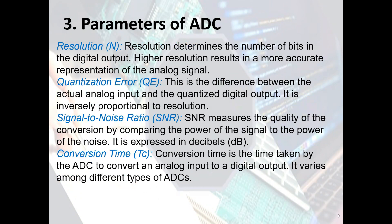Regardless of the type of ADC used, these are some key parameters to consider. Resolution, represented by the variable n, determines the number of bits in the digital output — higher resolution results in a more accurate representation. Quantization error Q is the difference between the actual analog input and the quantized digital output; it is inversely proportional to resolution. Signal-to-noise ratio (SNR) measures the quality of the conversion by comparing signal power to noise power, expressed in decibels (dB).